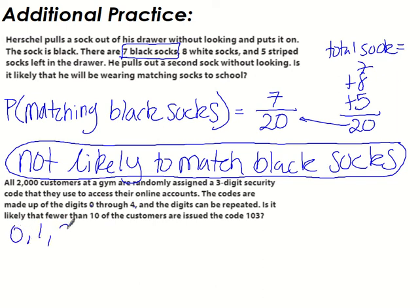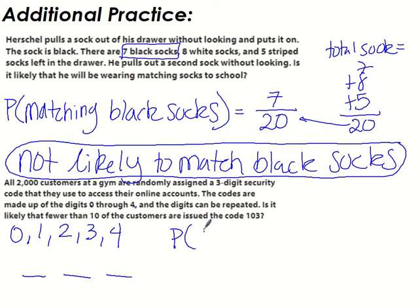The codes are made up of the digits zero through four — so they can have 0, 1, 2, 3, or 4 — and digits can be repeated. Is it likely that fewer than 10 customers are issued the code 1-0-3? We need to find the probability of getting code 1-0-3.